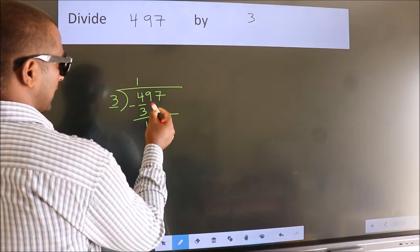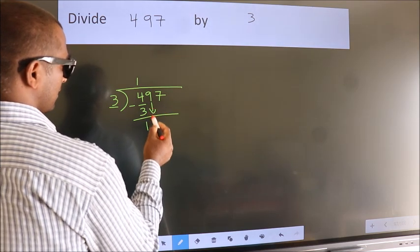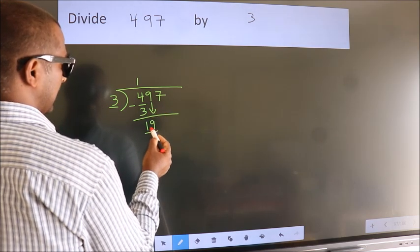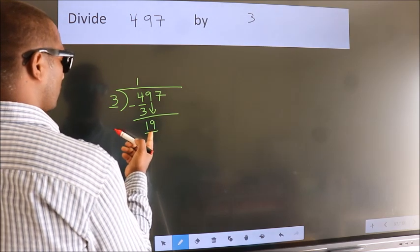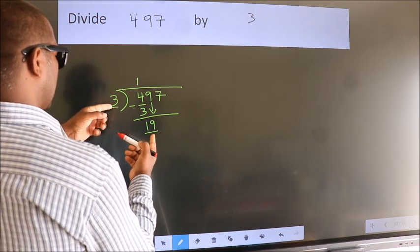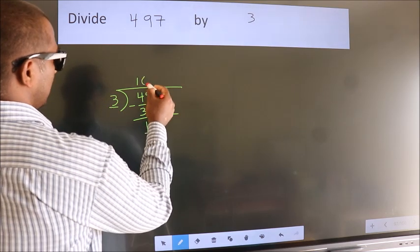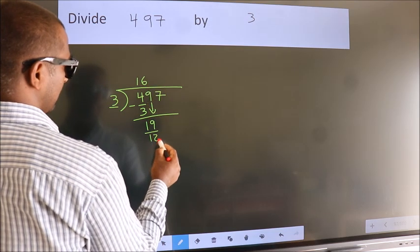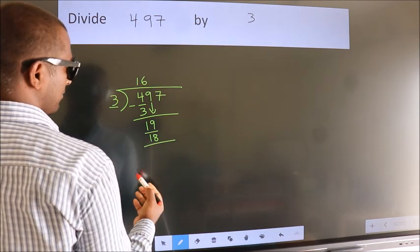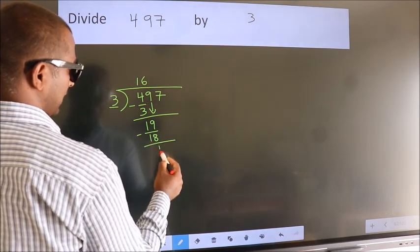After this, bring down the beside number. So 9 down. So 19. A number close to 19 in 3 table is 3, 6, 18. Now we subtract. We get 1.